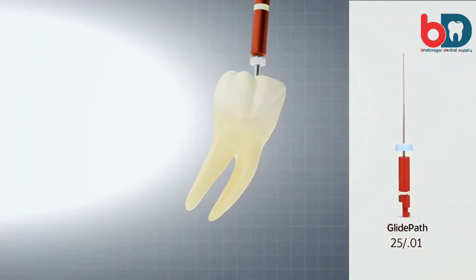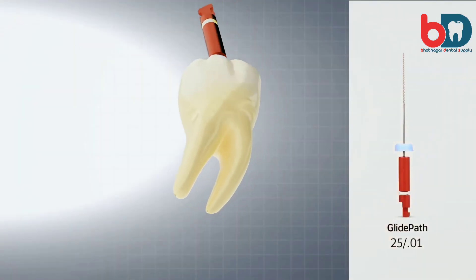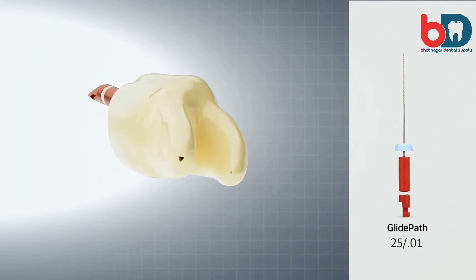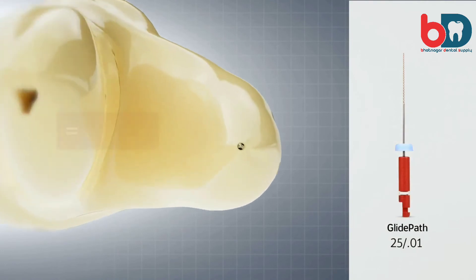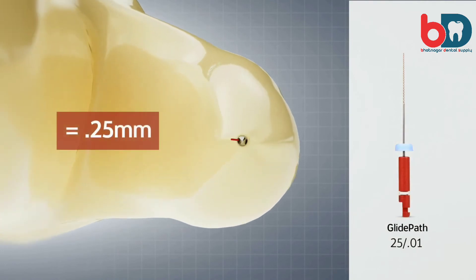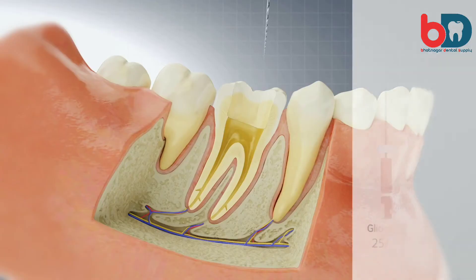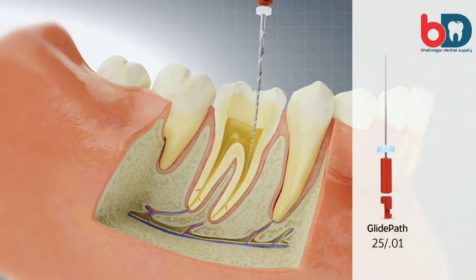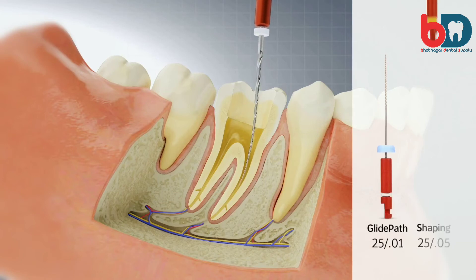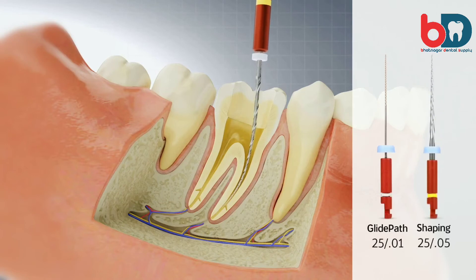If the 2501 Logic glide path file is snug at working length and the foramen diameter is at least 0.25 millimeter, proceed to the corresponding size Logic shaping file of the 2501 Logic glide path file — in this case, the 2505 Logic shaping file.